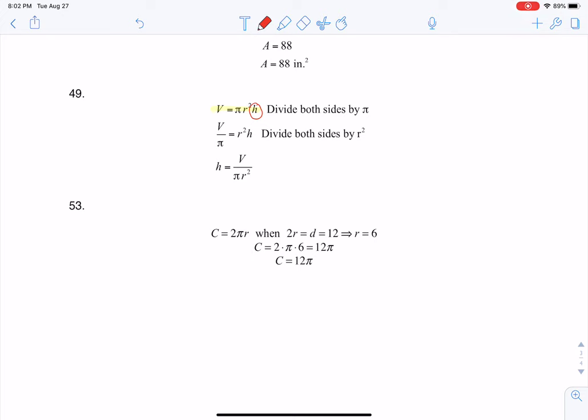So if I want to solve for H, if I take a look at it right now, right now the equation is solved for V. So you can see I actually have V over here isolated and solved for, and I'd like to solve for H.